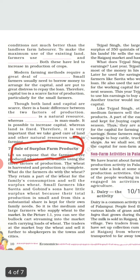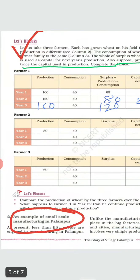The first topic is sale of surplus farm products. Let's understand this with an example. Suppose a farmer produced wheat using three factors of production. The farmer will keep a part of the wheat for family consumption and sell the rest in the market, which is known as surplus wheat. It is the medium and large farmers who supply wheat to the market and earn money. This surplus money can be deposited in the bank, used for further investment, or lent to small farmers.